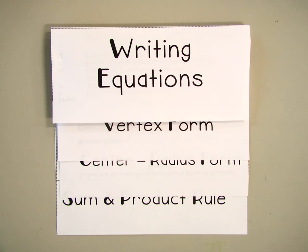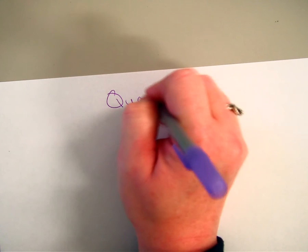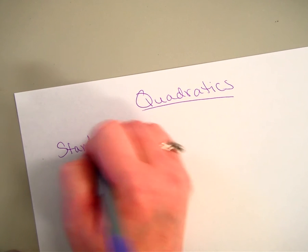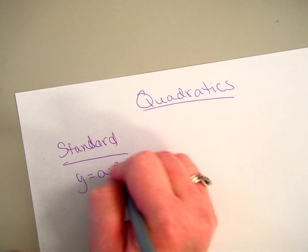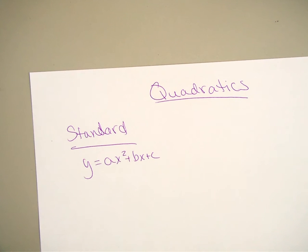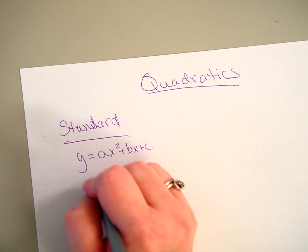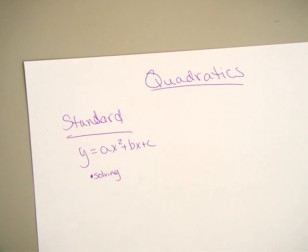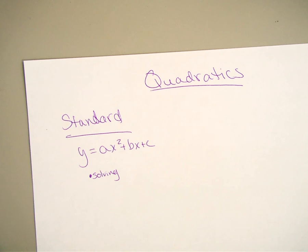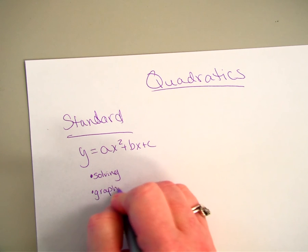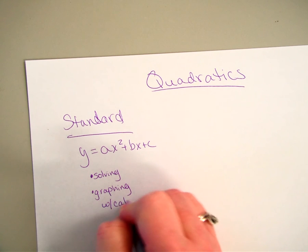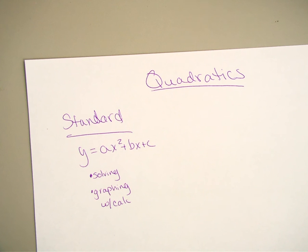Working on writing equations for quadratics, we'll recap what we've done so far. We've done standard form, which is y equals ax squared plus bx plus c. This is useful when you're solving — you need to get it into standard form to factor, use the quadratic formula, or complete the square. It's also helpful when graphing with a calculator to get your table of values.